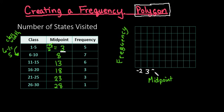So I would have three, eight, thirteen, eighteen, twenty-three, twenty-eight. And then I have to go one class more to close the polygon.